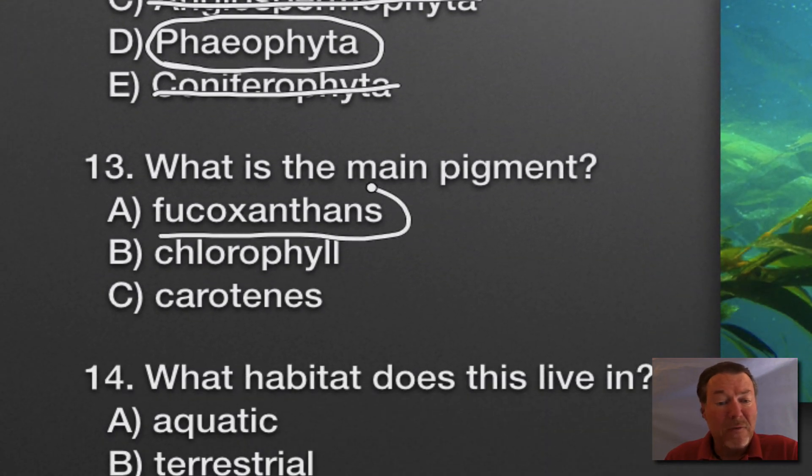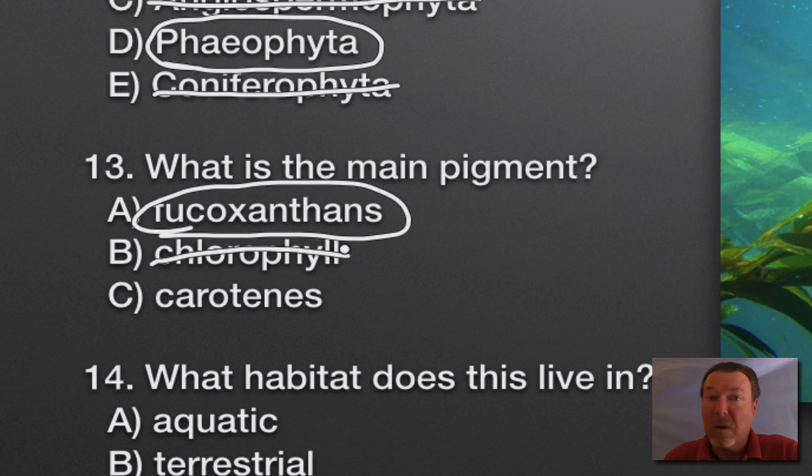What's the main pigment? You're just gonna have to remember this. It's fucoxanthins. Chlorophyll is green, hopefully you know that. And carotenes are orange, kind of like the word carrot. So fucoxanthins is the correct one here. Yeah, you're just gonna have to learn that. Sometimes you just have to memorize things, there's not a lot of logic, you just have to know it.